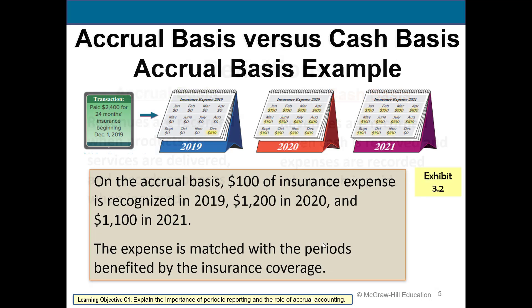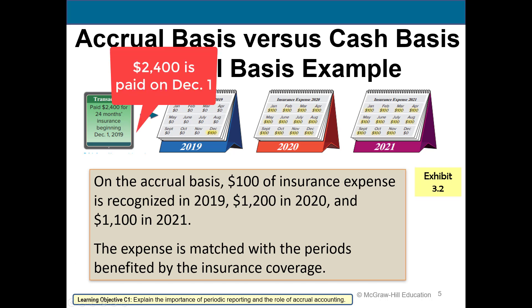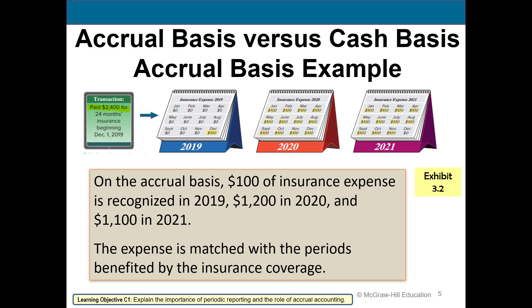This shows an example of the accrual basis. If they paid $2,400 for 24 months worth of insurance, under accrual accounting $100 would be recorded in each month — $2,400 divided by 24 months — so you spread it out over the time periods that are benefited. The expense is matched with the periods benefited by the insurance coverage.